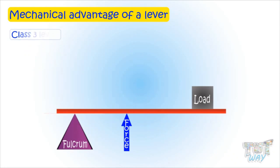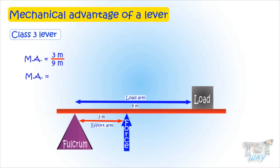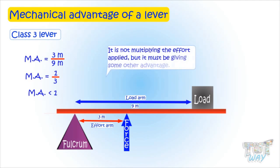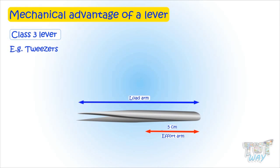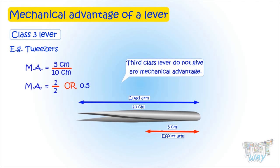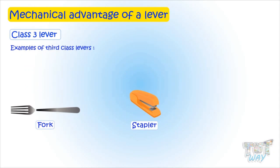Here is a class 3 lever, where the effort is in the center. The effort arm is always much smaller than the load arm, and the mechanical advantage is always less than 1. Less than 1 means it does not multiply the effort applied, but must be giving some other advantage — we will learn about it in higher grades. Here we have a tweezer, where the effort arm is 5 centimeters and the load arm is 10 centimeters. The mechanical advantage is 5 by 10, which equals 0.5 — even less than 1. So third class levers do not give mechanical advantage. Examples of third class levers include a fork, a stapler, and a tweezer.